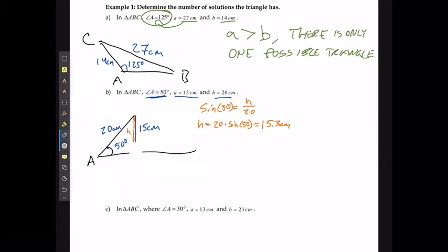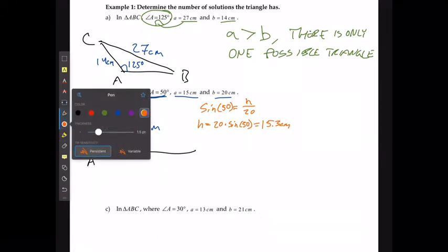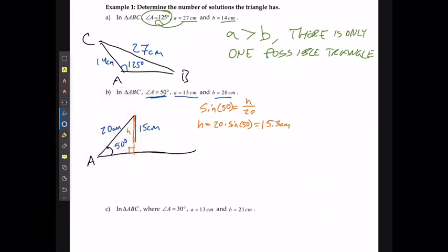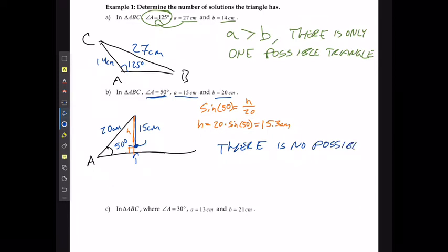As you can tell, if the altitude is 15.3 centimeters and side length A is only 15 centimeters, it doesn't matter which way it swings — it's never going to be able to make contact. There is no possible triangle. Side length A is not long enough to create any triangle.